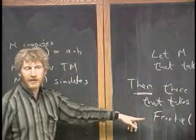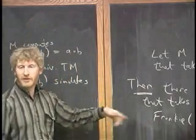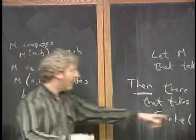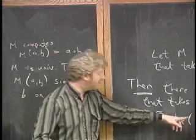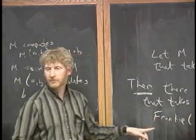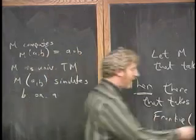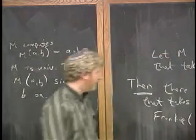This theorem says that there is a machine that takes other machines and simulates them on a string so that the string it simulates it on is the same as the description of Frankie.